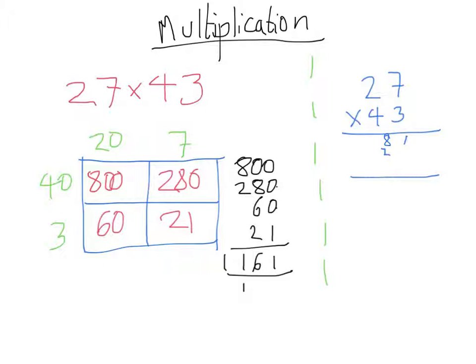Now we're going to multiply 27 by the 4, but that 4 actually means 40. So we need to add a 0 into the units column. Now, 4 times 7 is 28, carry the 2. 2 times 4 is 8, and add on the extra 2 to make 10, giving us 1080.